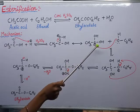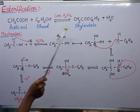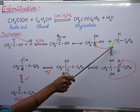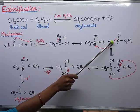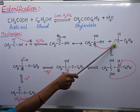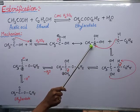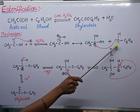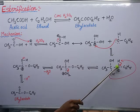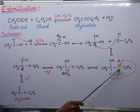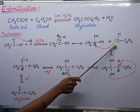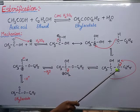This carbocation is attacked by the alcohol, that is ethanol. Ethanol's oxygen has two lone pairs of electrons. This oxygen donates its electrons towards the carbon, and there is a bond formation between carbon and oxygen. As oxygen is donating electrons, a positive charge develops on the oxygen.